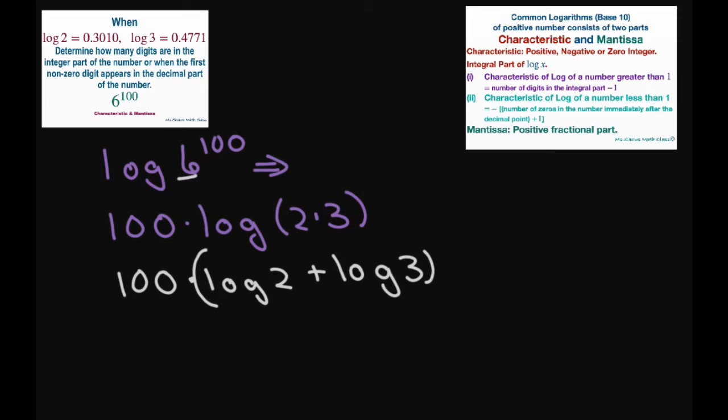So I split up my 6 because I have this information. This gives me equals to 100. And using substitution, we're going to have 0.3010 plus 0.4771. And I used the calculator and I got 77.81.